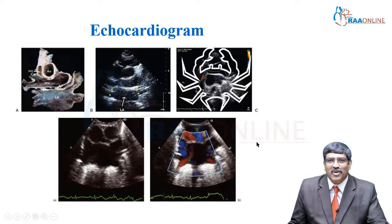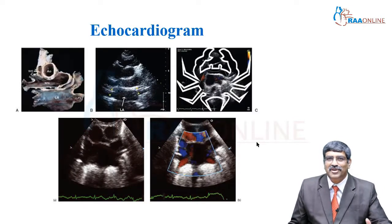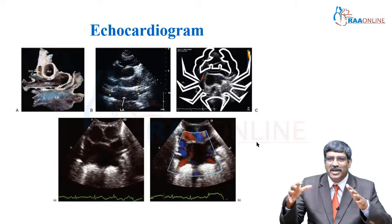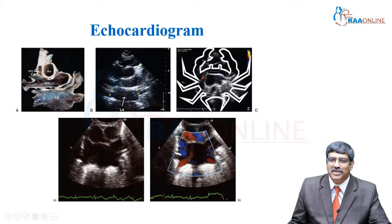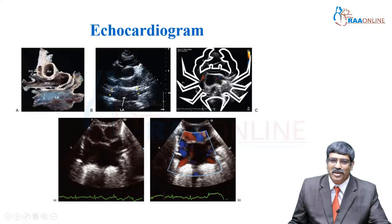Coming to echocardiogram, the classical parasternal view used to locate the pulmonary vein draining into the left atrium is called the crab view. The horn of the crab is formed by the SVC and the LA appendage, and the legs and arms are formed by the four pulmonary veins.